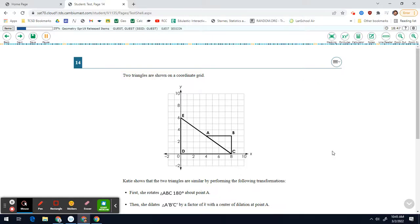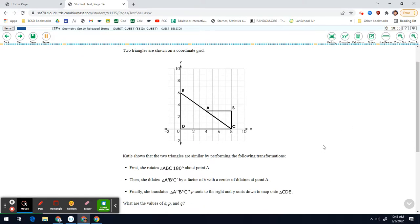Geometry OST, Spring 2019, Question 14. It says two triangles are shown on a coordinate grid.